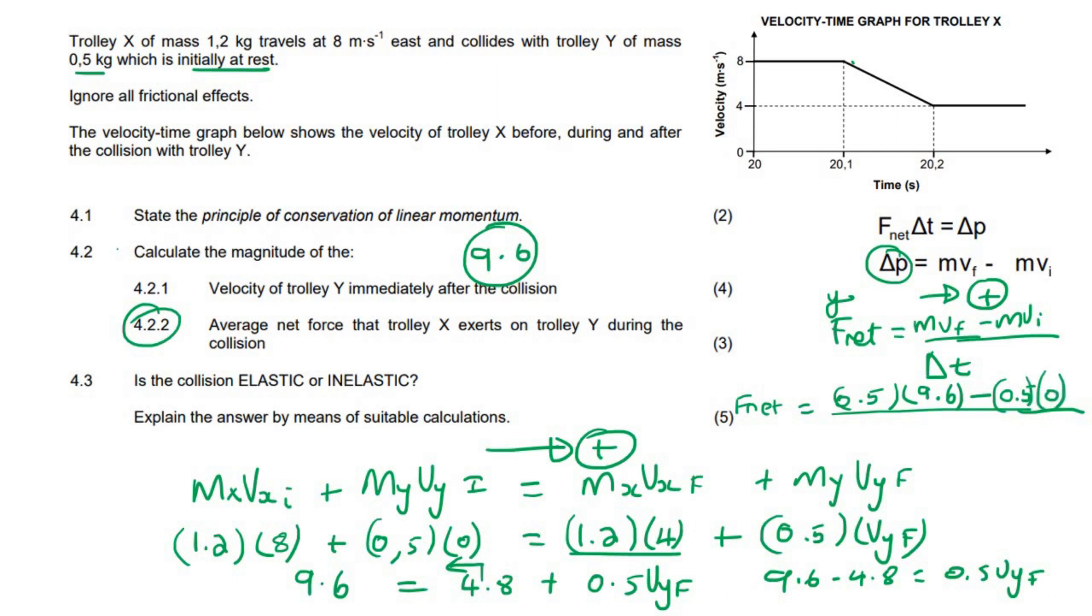And then the time for the collision. Now this is the collision part. How long did the collision last for? There. So you could say 20.2 minus 20.1, or you could just say 0.1 seconds. Now, if you go type all that in, it's 48 newtons. I'm not going to give a direction because they said calculate the magnitude of, so it's just going to be 48 newtons.